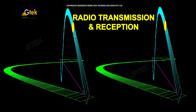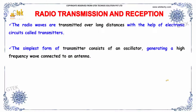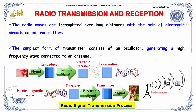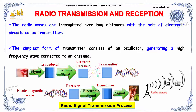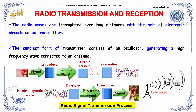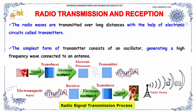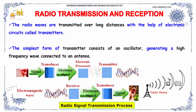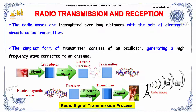This is about radio transmission and reception. Radio waves are transmitted over long distances with the help of an electronic circuit called a transmitter. The simplest form of transmitter consists of an oscillator generating a high frequency connected to the antenna.